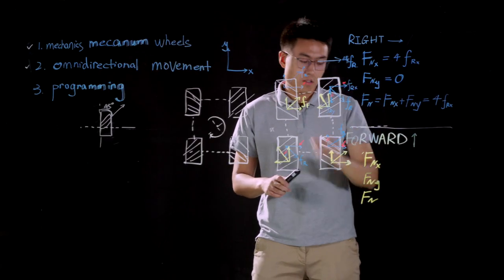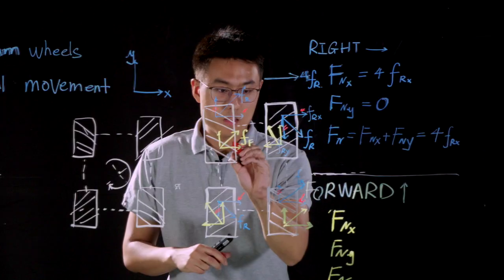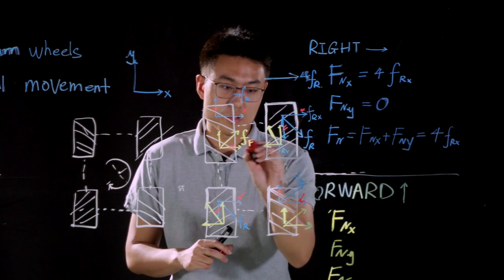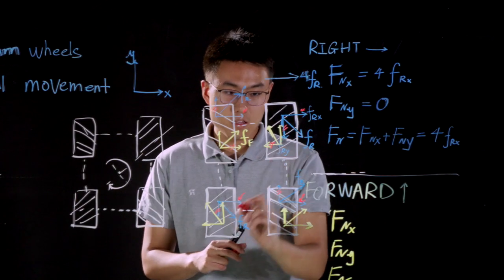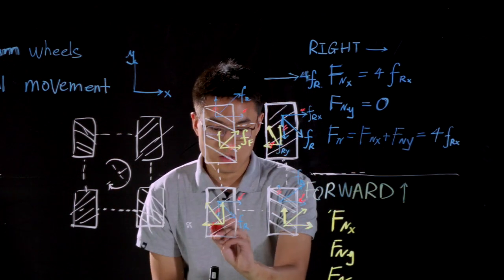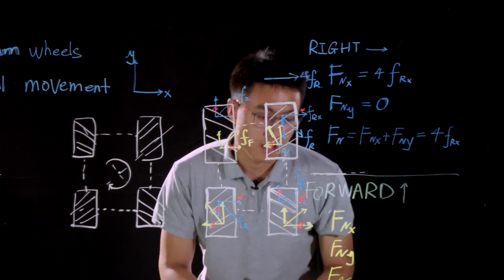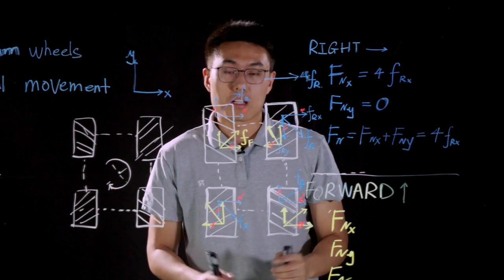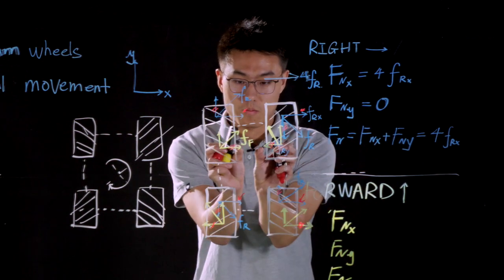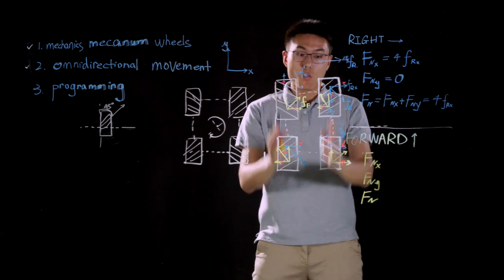So on X axis, you can actually see that this pair of forces can be cancelled with each other. And it's the same for this pair of forces. The reason why they can be cancelled with each other is that they have same magnitude but in opposite directions.